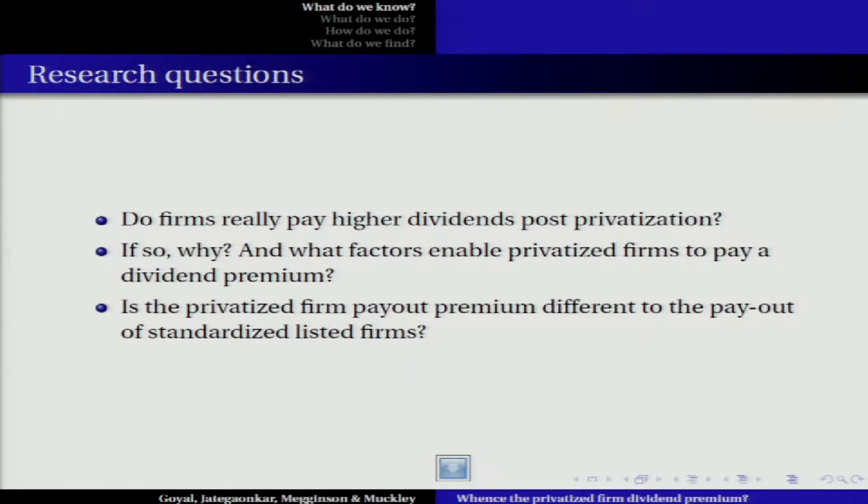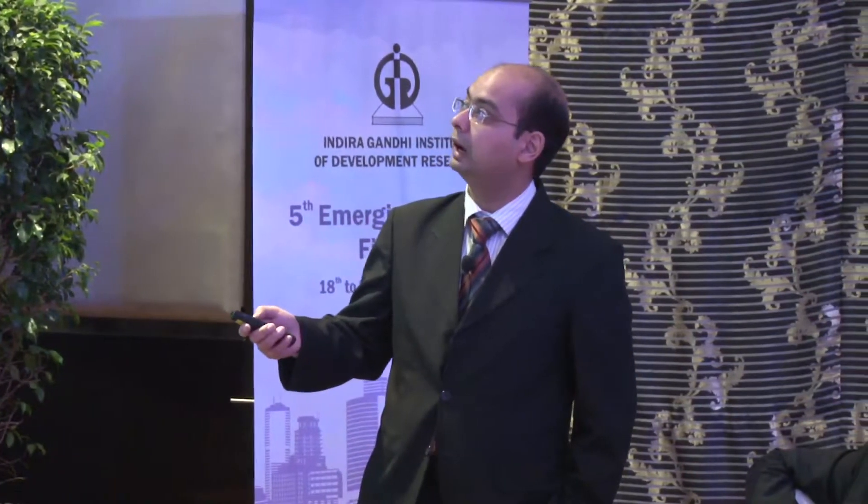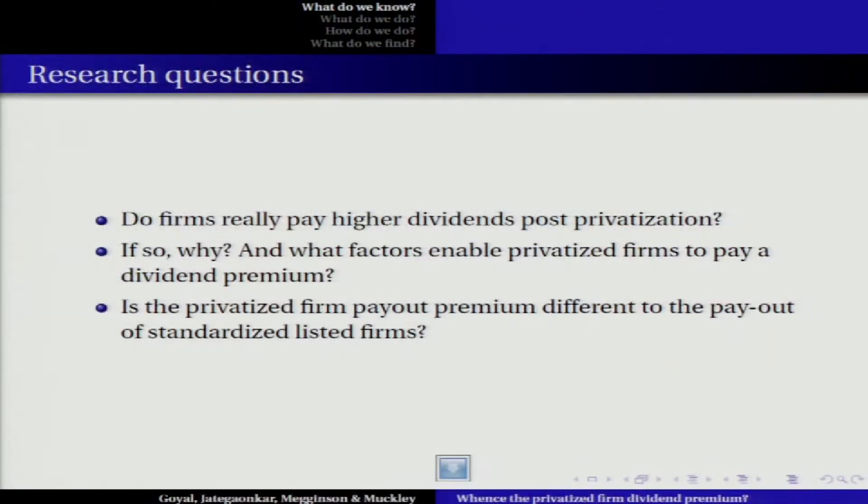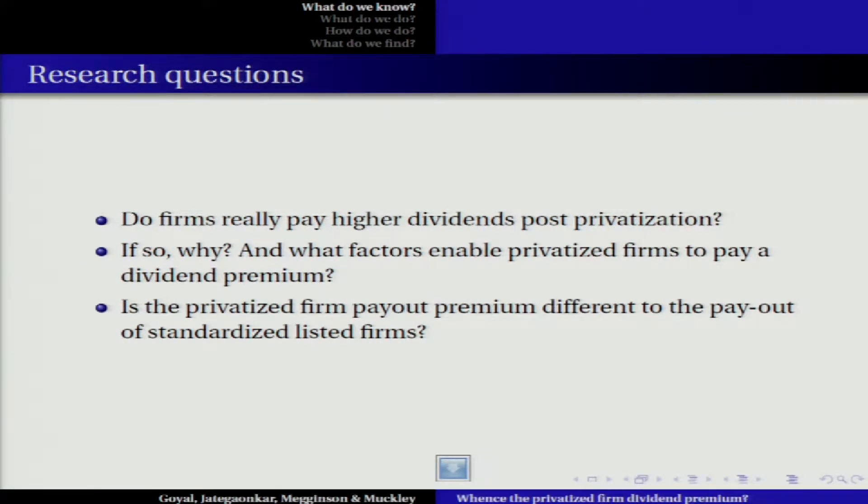Coming to the paper, what are the key research questions? This proxy or variable was consistently positive and highly significant. So we start with: do firms really pay higher dividends post-privatization? Because at that point we were only looking at the determinants of payout once the firms were listed. We decided to specifically focus on state-owned enterprises and ask: is it really the case globally? If so, what are the factors which enable privatized firms to pay a dividend premium? What are the firm-level determinants affecting this phenomenon? And is the privatized firm payout premium different to the payout of standardized listed firms? What are the theoretical explanations for why this is happening?